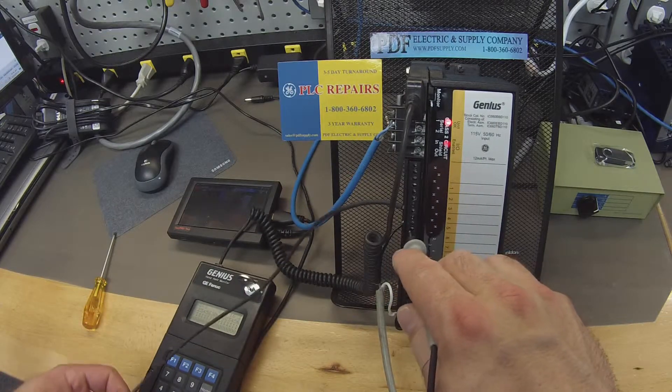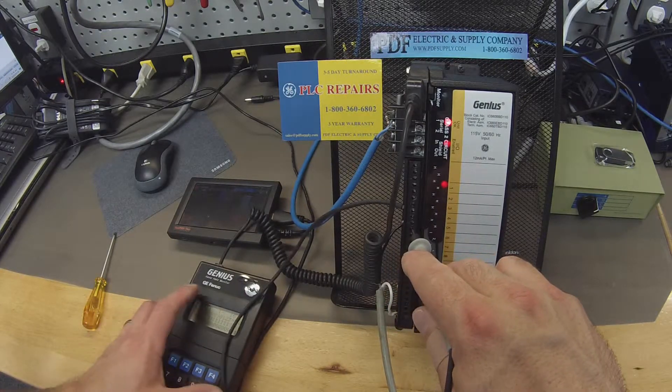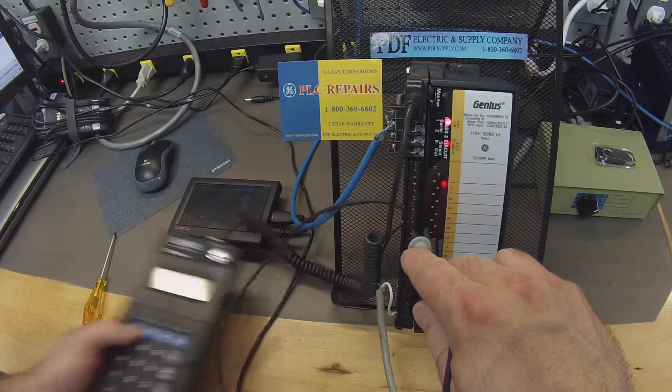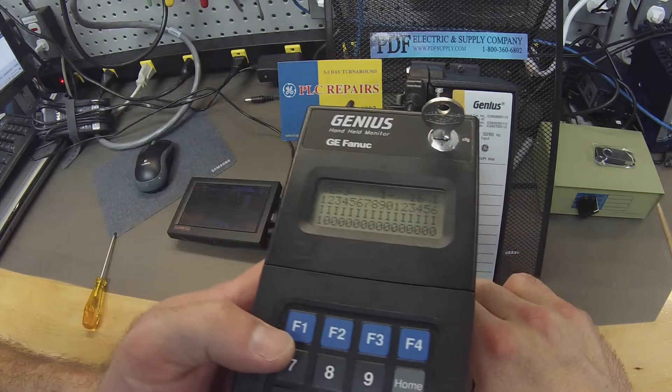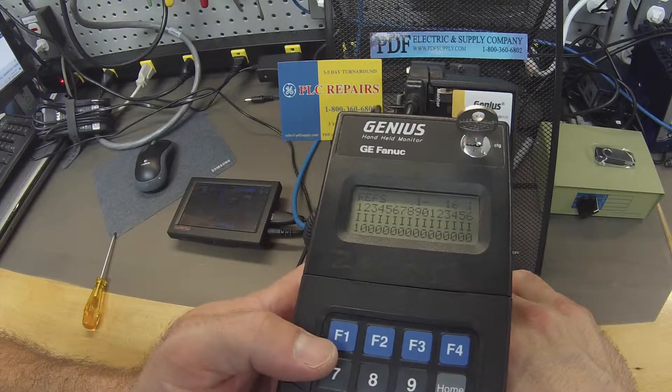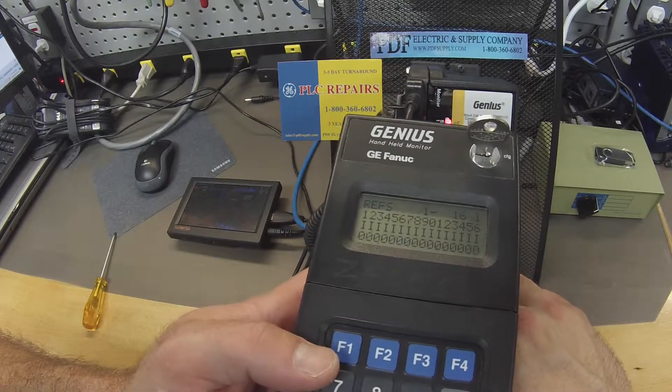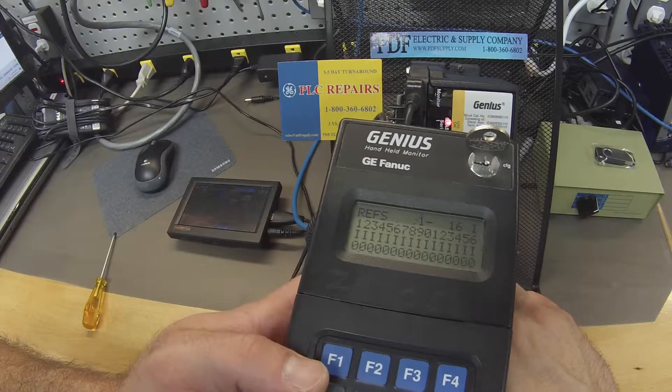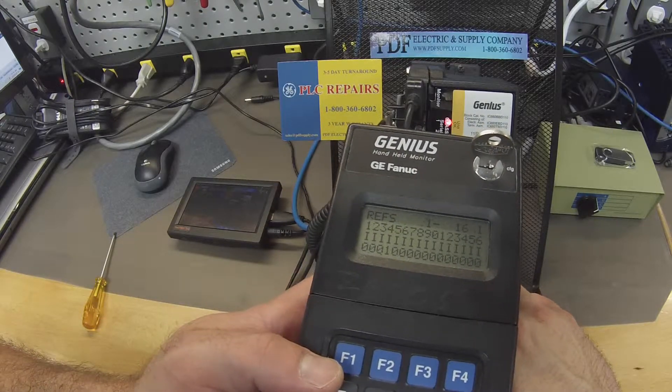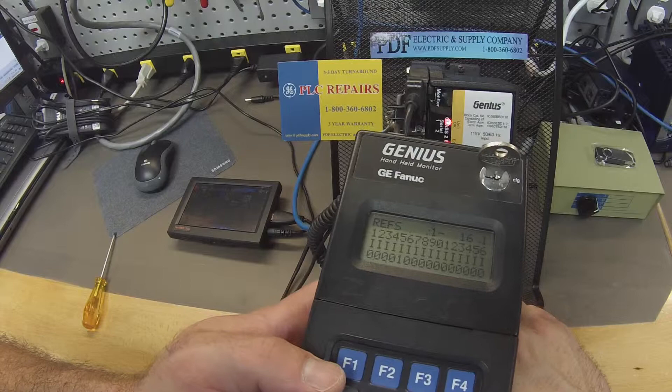Just for an example, I'm going to touch one of them. As you can see, it's changed to a 1 under 1. A 1 under 2. Number 3 is on. Number 4 is on and so forth. Number 5 is on.